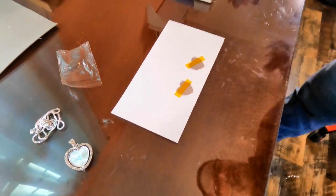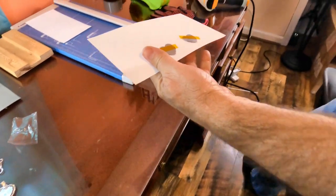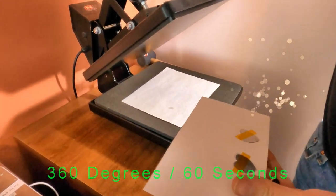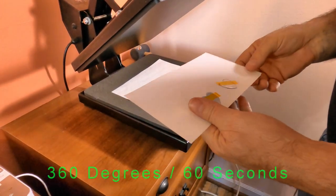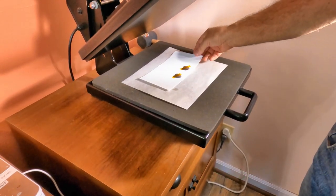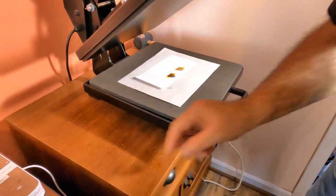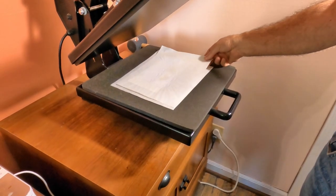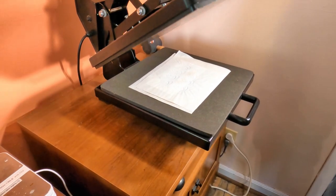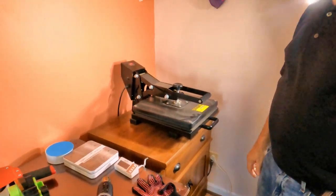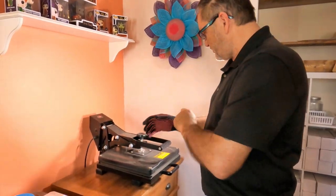Once you have that on here, go over to your heat press. We got the heat press set at 360 degrees for 60 seconds. When you put this in here, you put the paper down and your little sublimation blanks on top. Then we'll cover this with another piece of butcher paper and let it go for 60 seconds.